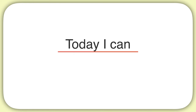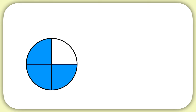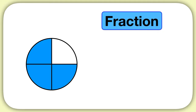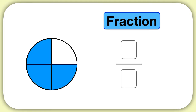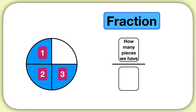Today we are learning how to identify fractions. Let's start by identifying what fraction of this circle is shaded. Remember that a fraction has two parts. The part on top tells us how many pieces we have shaded. We can see in our circle that 1, 2, 3 pieces are shaded, so we'll write the number 3 above the line.